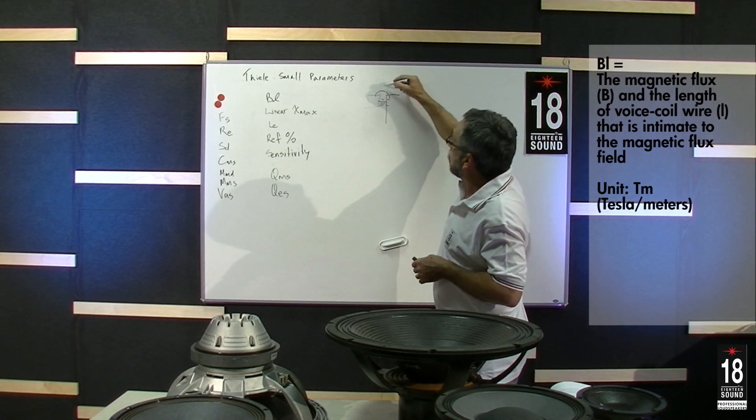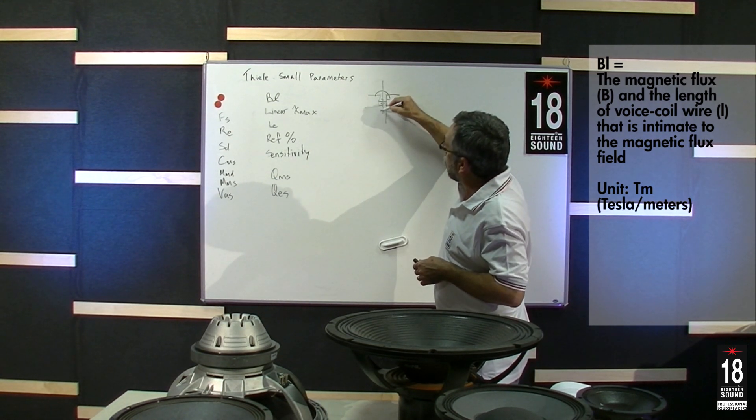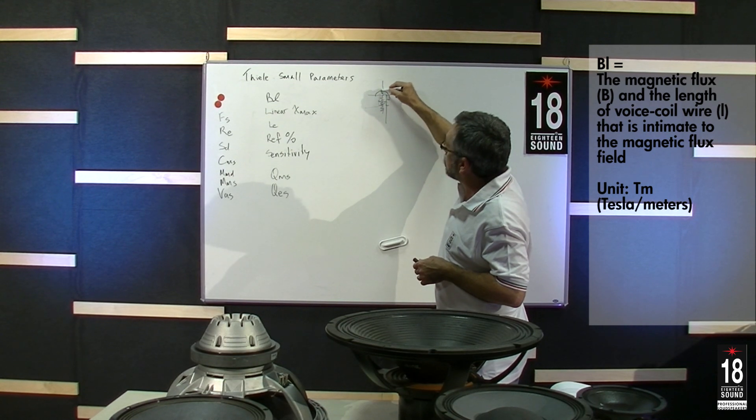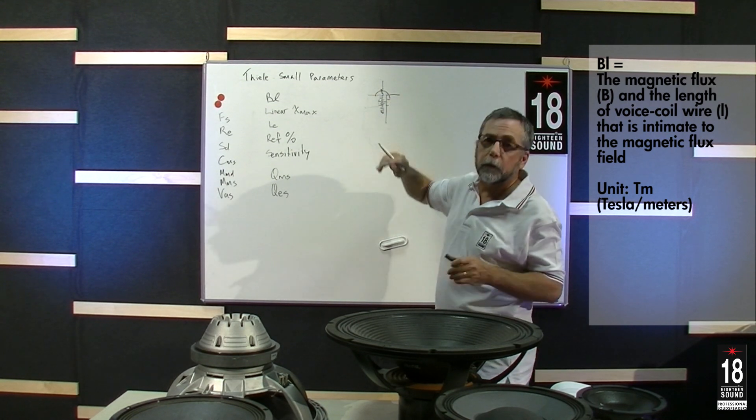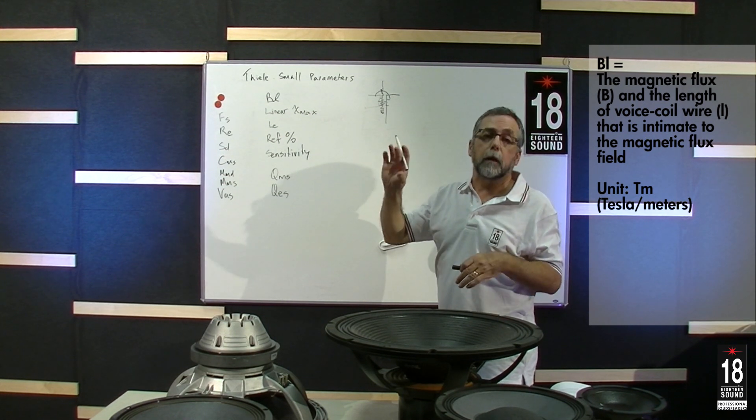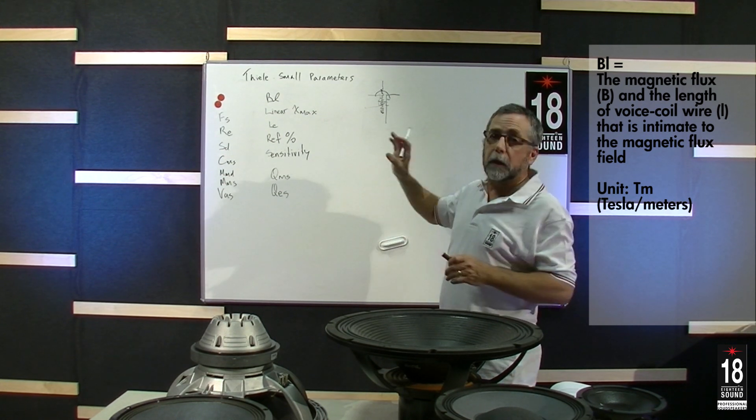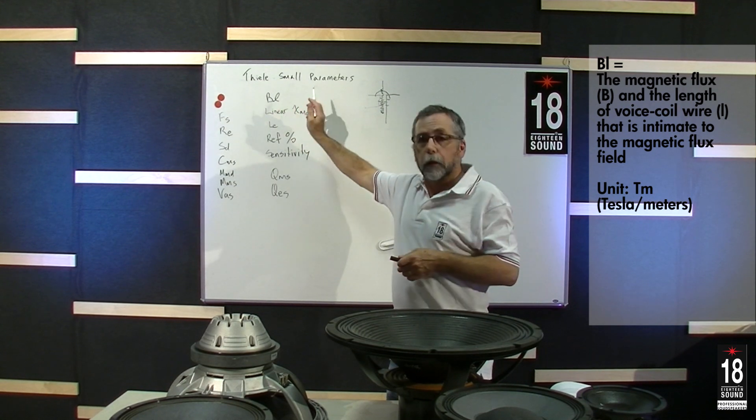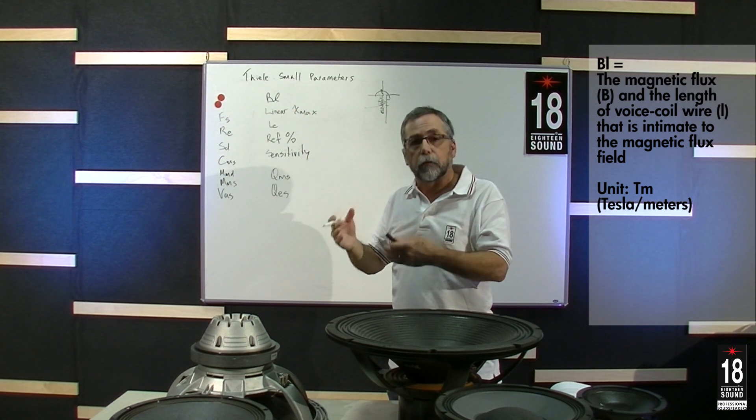The voice coil is wound on its former and has a number of turns. Typically we see voice coils that are taller than the gap, occasionally equal height, and sometimes even shorter. The BL is flux and length of wire that is intimate to the flux field.